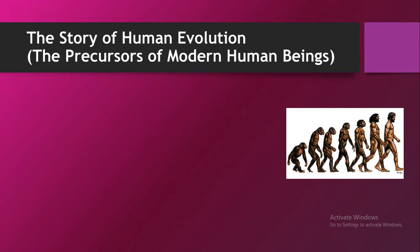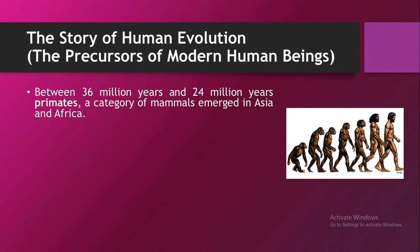Now let us study the story of human evolution. We will study about the precursors of modern human beings. Between 36 million years and 24 million years ago, primates — a category of mammals — emerged in Asia and Africa, and they were considered as the forerunners of the modern human beings.